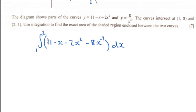integrate. So 11 becomes 11x, minus x becomes minus x squared over 2, minus 2x squared add 1 to the power divide by the new power, and the same for this one, add 1 to the power divide by the new power.